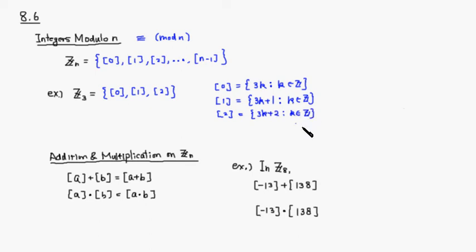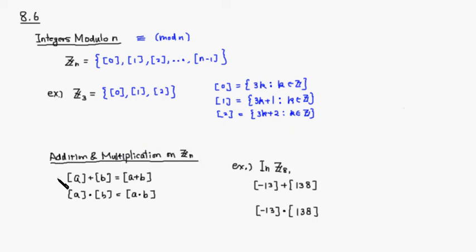And the equivalence class represented by 2 is any number that when you divide by 3 you get remainder 2. Then we can define operations, especially addition and multiplication, on Z mod n.